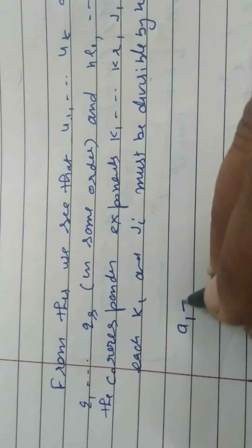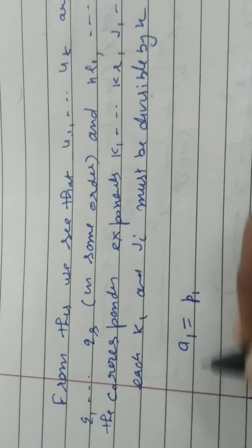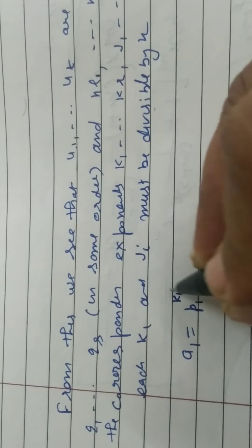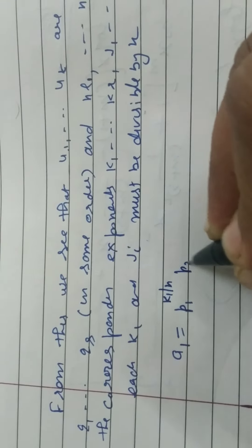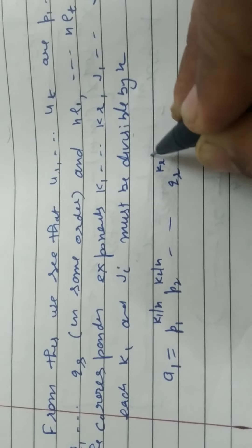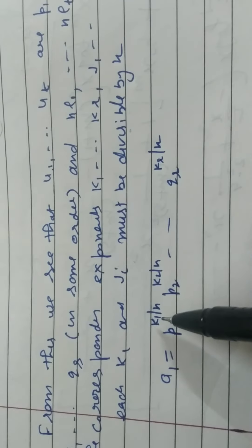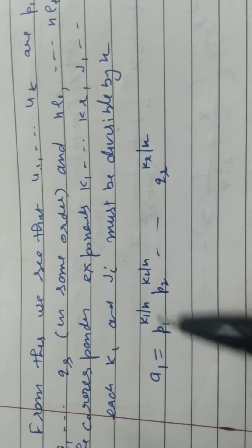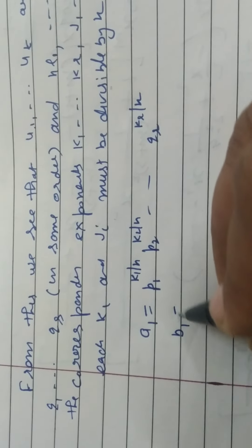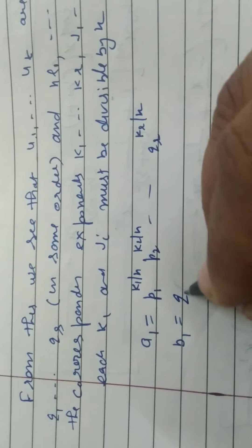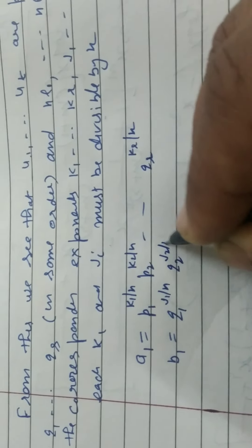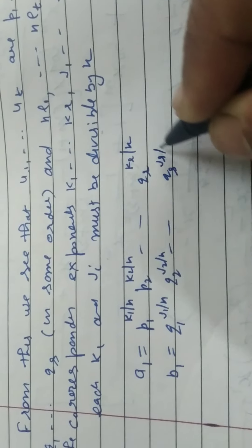तो A1 को हमने ऐसा लिख सकते हैं, A था, P1 to the power K1 by N, P2 to the power K2 by N, PR to the power KR by N. क्यों हमने कहा है कि these all are divisible by N, K1, K2, KR, all are divisible by N. Now we take B1: Q1 to the power J1 by N, Q2 to the power J2 by N, QS to the power JS by N.